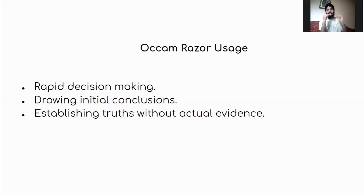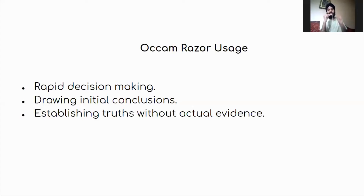The second limitation is that with Occam's Razor Principle, you can't necessarily always find the truth, because simplest doesn't mean the truth. You need a good amount of evidence in order to reach the truth. And third, this principle may help in drawing some initial conclusions, but for drawing end conclusions or finding an end result, this principle is not so helpful.